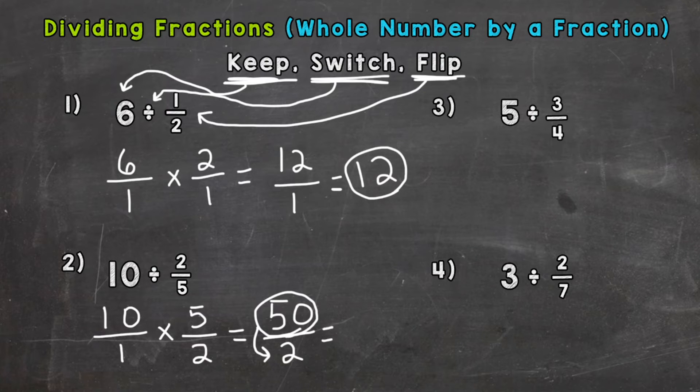How many whole groups of 2 can we pull out of 50? The answer to that is 25. And there's nothing left over, no remainder. It worked out as a whole number, so that is our quotient or answer, 25.